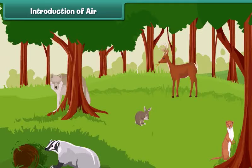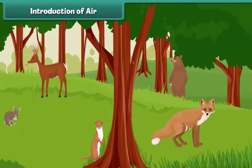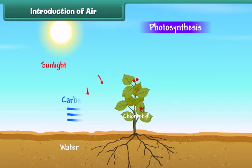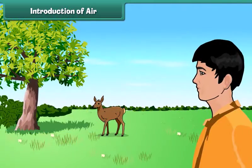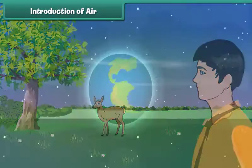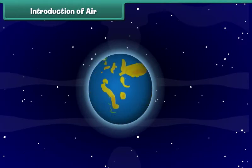Air is very important for almost all life on earth including plants and animals. Plants need carbon dioxide from air to do photosynthesis and release oxygen into the air. Human beings and animals need to breathe air to get the oxygen they need to survive.